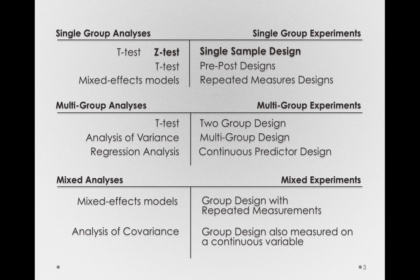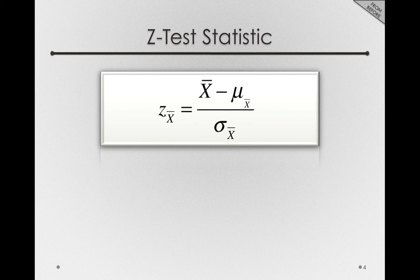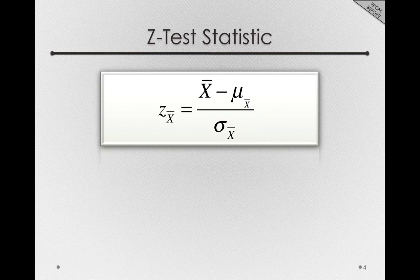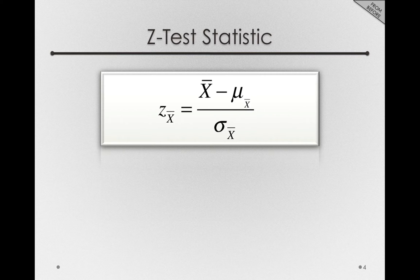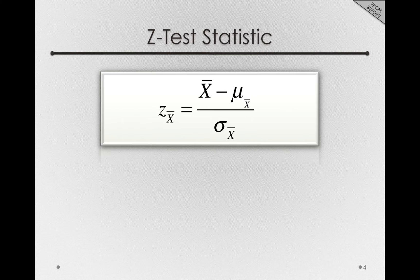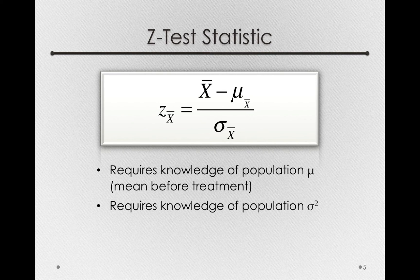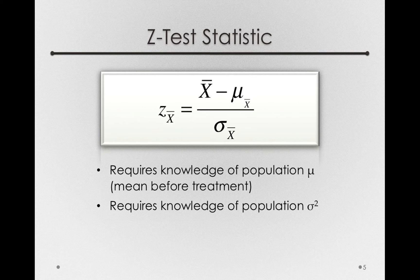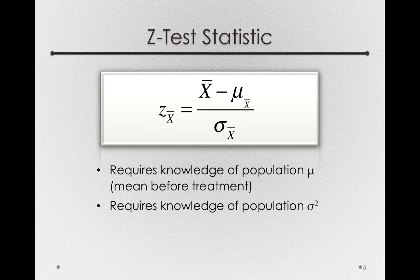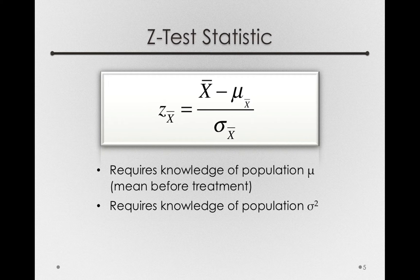Now in practice, the z-test is rarely used. Notice that the z-test statistic requires that we know a considerable amount of information about the population before we treat it. Specifically, we need to know the population mean before treatment, and we have to know the population variance or standard deviation before treatment.